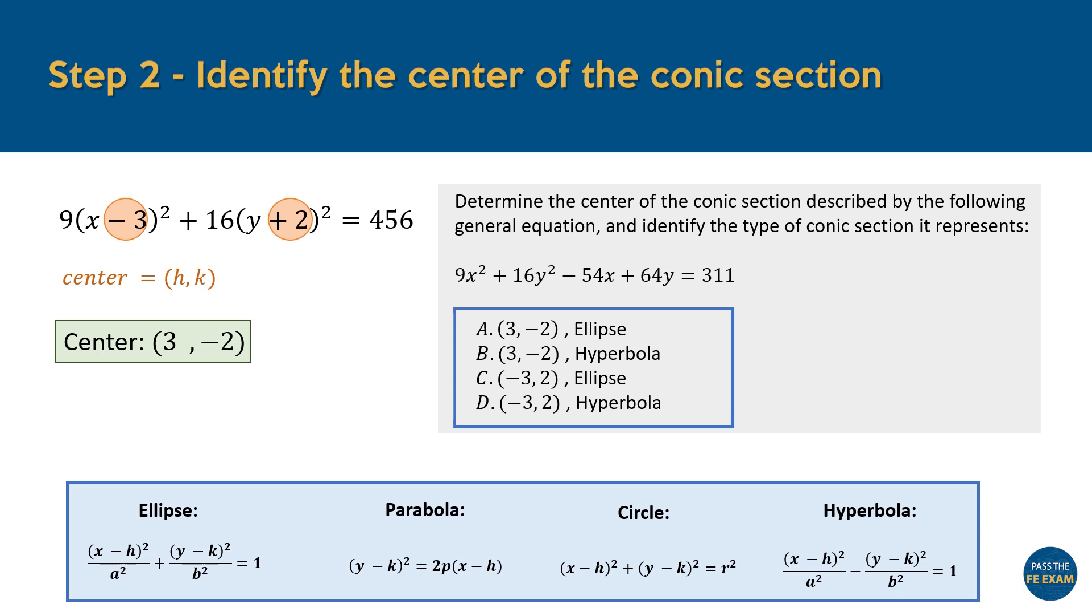It's worth noting that the way these multiple choice options are presented could easily cause confusion, especially if small mistakes are made. First, remember the distinction between the signs of H and K in the equation versus their coordinates. In other words, be careful not to misinterpret the center as negative 3 and positive 2 by incorrectly swapping the signs.